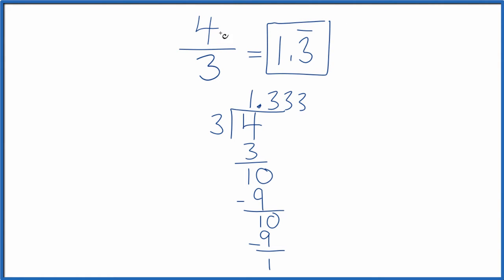So whether you use a calculator to find the decimal for four-thirds or if you do it longhand, you end up with 1.3 and the three repeating.